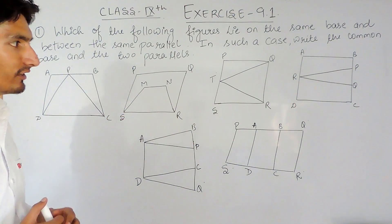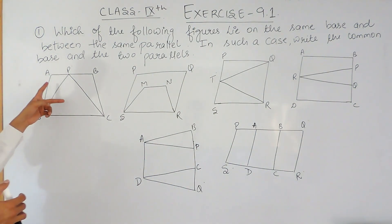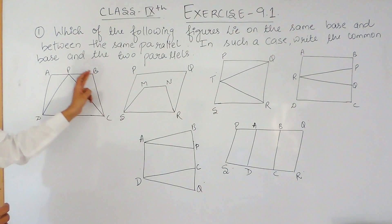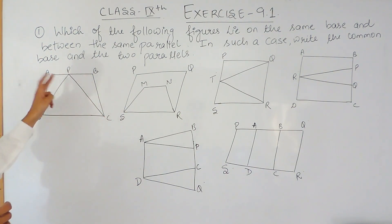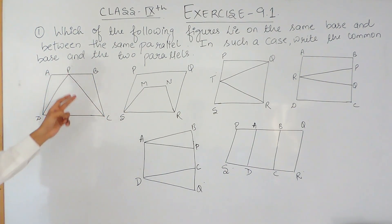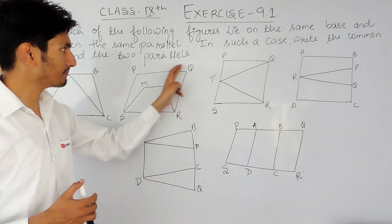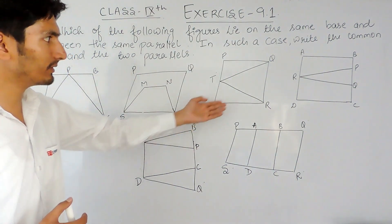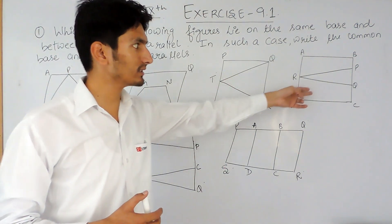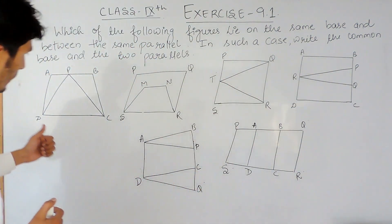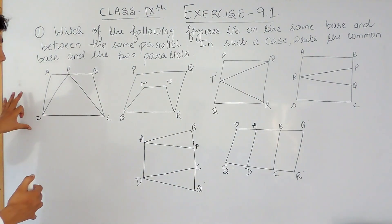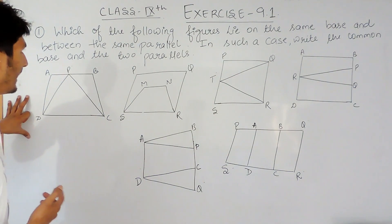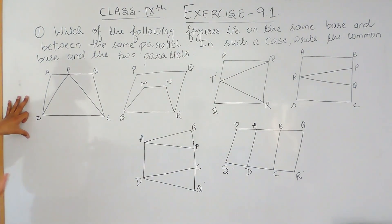There are six figures given to you and obviously every figure contains two figures. The first figure is a trapezium and the second figure is a triangle. Here also the first figure is a parallelogram and the second figure is a trapezium. Similarly the other figures also contain two figures each. You have to find whether these two figures are on the same base and between the same parallel or not.